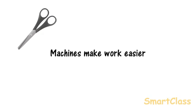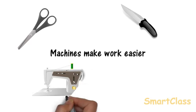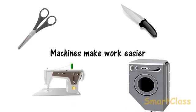For example, scissors help us to cut cloth or paper easily and faster. We can cut fruits and vegetables easily with knives. A sewing machine stitches clothes faster. Similarly, a washing machine makes washing clothes easier and faster.